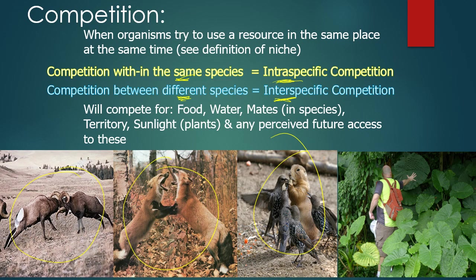For plants, they will compete for sunlight. You can see these plants on the right are actually competing for access to sunlight — if they don't get it, they can't do photosynthesis. In the case of animals, you can also have competition for perceived future access to things like food, water, or resources. These rams are probably competing for access to mates. These foxes are probably competing for food or territory. And these plants are in direct competition not just for sunlight, but probably also for water and the most nutritious soil.